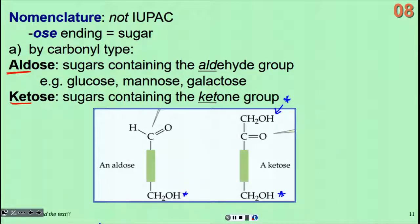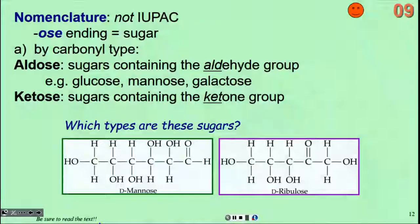Common sugars that are aldoses include glucose and galactose that I showed you a little bit ago, and mannose is another one. We'll see all of these with various examples as we go. So taking that idea, what do we have for these two sugars and why do we call them what we do?